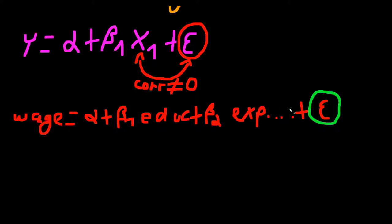And ability will correlate with a lot of your explanatory variables. So for example, ability is correlated with education because people with higher ability tend to have higher education. So again, the correlation is not equal to zero.